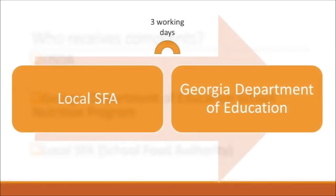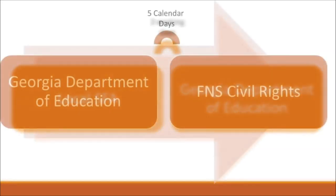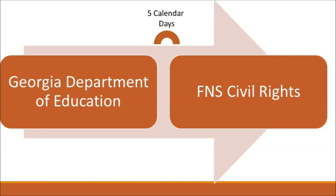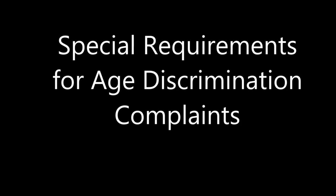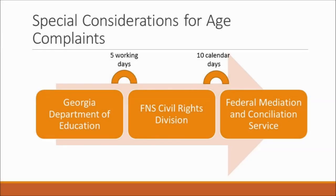If a civil rights complaint is received at the local level, it must be forwarded to the Georgia Department of Education School Nutrition Program Office within three working days. All civil rights complaints sent to the Georgia Department of Education shall be accepted and forwarded to the FNS Civil Rights Division, or the regional civil rights director, FNS Southeast Region, within five calendar days. Additional procedures are required for complaints alleging discrimination based on age. The Georgia Department of Education must forward age complaints to the FNS Civil Rights Division within five working days, and the FNS Civil Rights Director will refer the complaint to the Federal Mediation and Conciliation Service (FMCS) for mediation within ten calendar days of initial receipt.